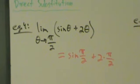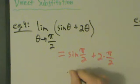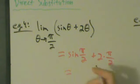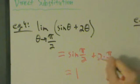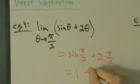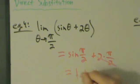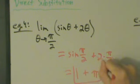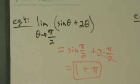If we recall the unit circle, sine of pi over 2 is 1, and 2 times pi over 2 — the 2s cancel — and we just have plus pi left. So that's our answer: 1 plus pi. That's Example 4.